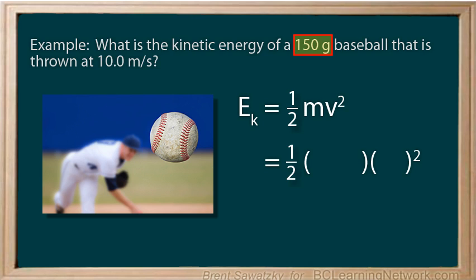We have to remember to convert this to kilograms because we want our answer in joules. So, we remember that there are 1000 grams in every kilogram, so we just move the decimal place over three times, and we get 0.15 kilograms. Now we can put it into the equation. The velocity is already in meters per second, so we can just plug that straight in, and we're ready for calculating. So, the kinetic energy of the baseball is 7.5 joules.